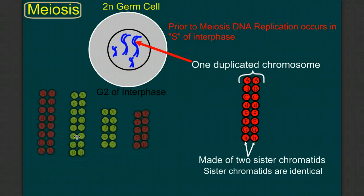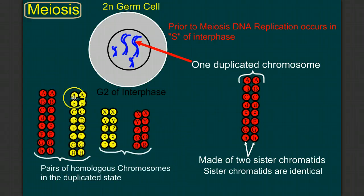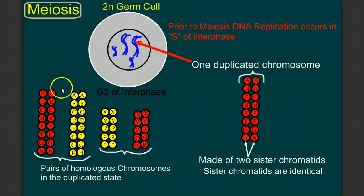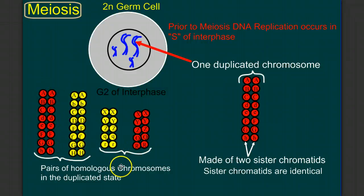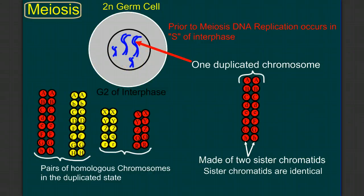So what we have in our cell now are pairs of homologous chromosomes — each duplicated and homologous. Each chromatid of the sister pair is identical, but our homologs are just alike, not identical. While we go through the process of meiosis, I want to track where these chromosomes are going. So instead of having them all blue, I'm going to color them yellow and red to make it easier to track them as we go through the process. Now we'll begin our steps of meiosis.